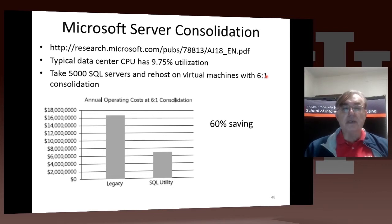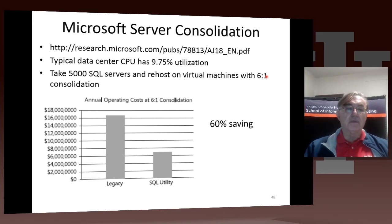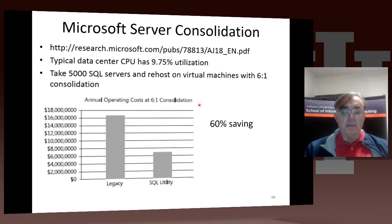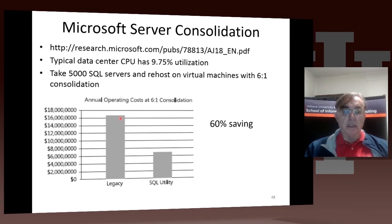A nice feature of the virtualization model is that because you have the whole thing packaged, it's relatively easy to move it from one machine to another if a particular machine gets too busy. So for this particular example, which Microsoft gives as a 6 to 1 consolidation, the operating costs of this facility were reduced by 60%. Here's the new one, and here's the old one.